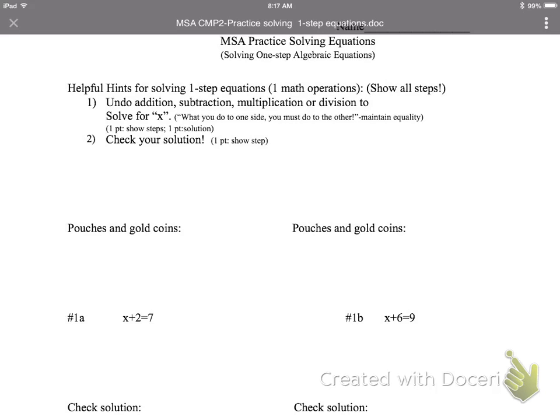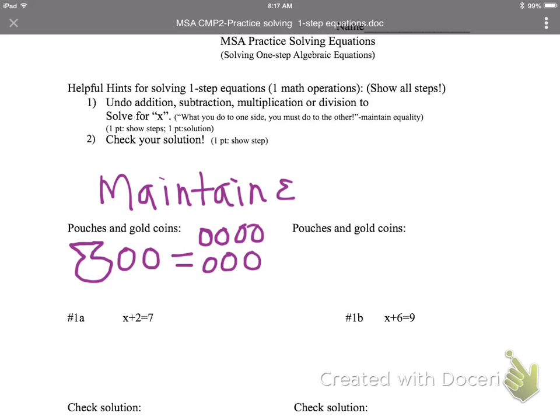To help you solve for x, we need to get in the mindset of doing what's called the inverse operation, or doing the opposite of addition, which would be subtraction, to help solve the equation. So I want to take us back to the pouches and gold coins. I'm going to draw a pouch, because that represents the equation below for x plus 2 equals 7. There's my pouch, and I'm going to represent 2 gold coins. That's on the left side of the equation. And then on the right side, I have 7 gold coins. The big thing that I want us to remember from our previous lesson is that we always need to maintain equality.